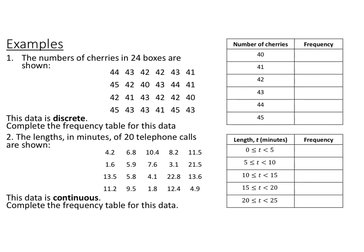The first thing we're going to look at is how to organize data using frequency charts. We have two groups of data here. This first one is discrete data — it can only be certain values, it's counted: the number of cherries. Down here we have length in minutes of phone calls, so this is continuous data. For discrete data, each different value gets its own row. For continuous data, we represent it as an interval. So we're looking at anything between 0 and 5 minutes, 5 to 10 minutes, and so on. Frequency is just how many.